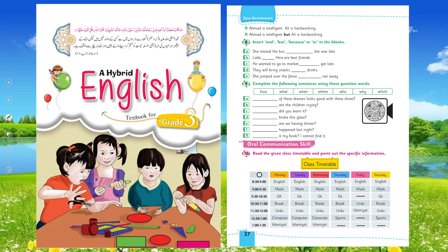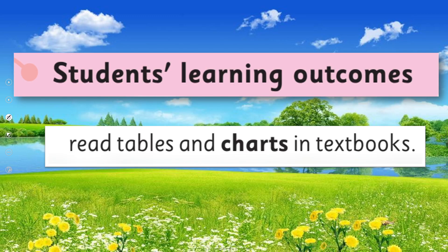Before this, in English for Grade 3, you have already learned about tables and charts — class timetables and specific information. I hope you remember it. If not, on page number 37 there is a video lecture, so you can watch it again. Our today's Student Learning Outcome is: read tables and charts in textbooks.